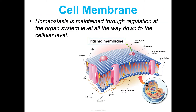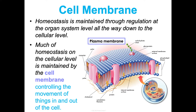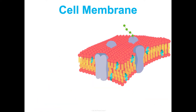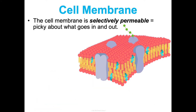Homeostasis is maintained through regulation at an organ system level all the way down to the cellular level. At the cellular level, that's happening because of the cell membrane controlling what goes in and out of the cell. This is how feedback mechanisms are maintained — through the cell membrane. The cell membrane is selectively permeable, meaning it's picky about what goes in and out of it, because of the phospholipid bilayer with the hydrophilic heads and the hydrophobic tails.